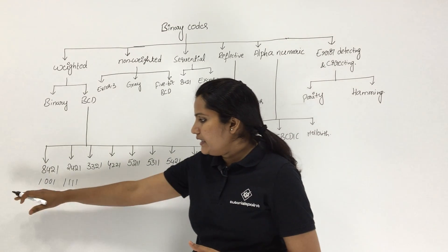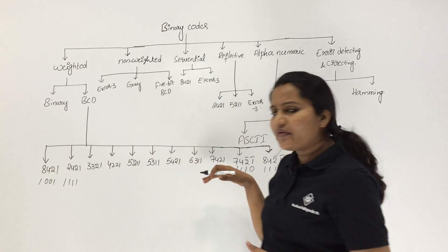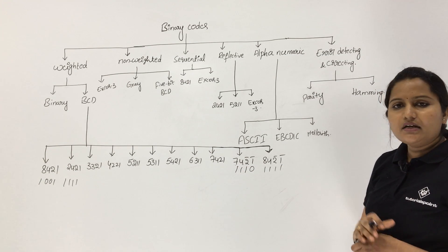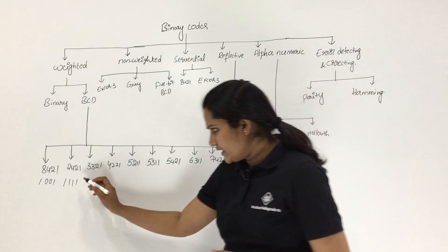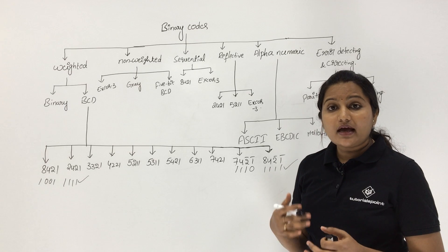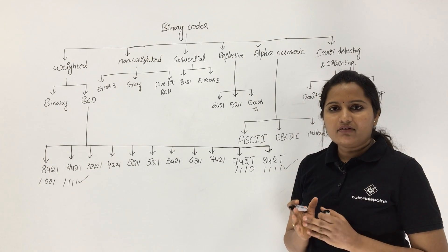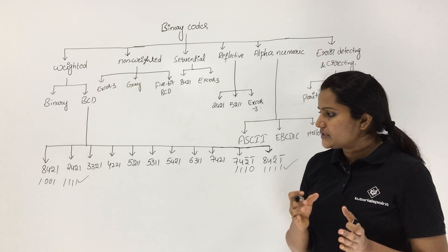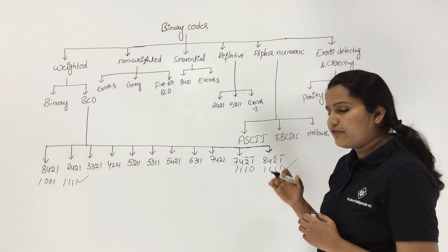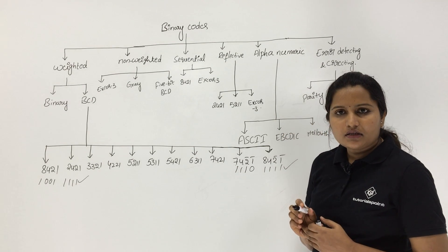See the difference: 9 in 8421 code is 1001; 9 in 2421 code is 1111; 9 in 742̄1̄ code is 1110; and 9 in 842̄1̄ code is also 1111. So for 2421 and 842̄1̄ codes, 9 has the same binary representation 1111. Exam questions may ask which codes have equivalent binary representations for digit 9.